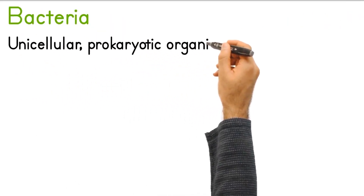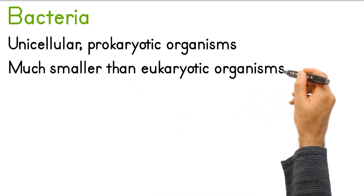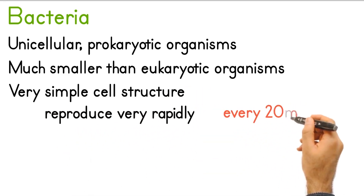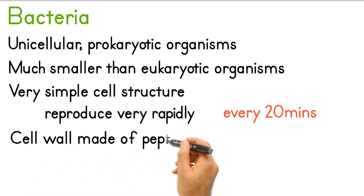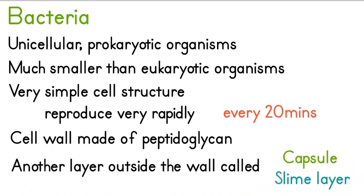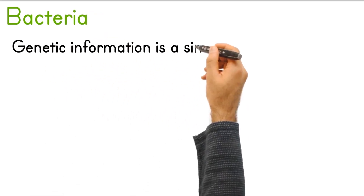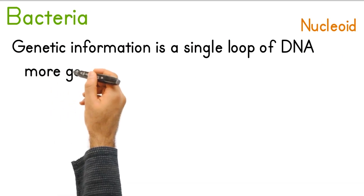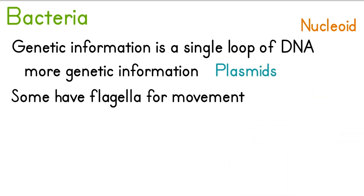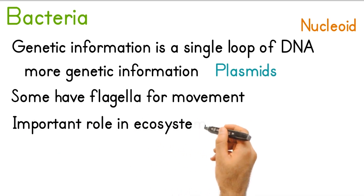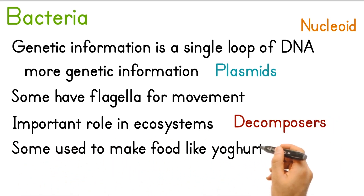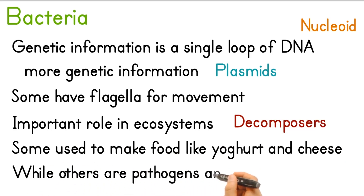Bacteria are unicellular, prokaryotic organisms. They are much smaller than eukaryotic organisms and have a very simple cell structure. They can reproduce very rapidly, around every 20 minutes. Bacterial cells have a cell wall made of peptidoglycan. Some have an additional outer layer called a capsule or slime layer. Genetic information is contained in a single loop of DNA called a nucleoid, and they can also store genetic information in plasmids. Some have flagella for movement. Bacteria and fungi play a very important role in ecosystems as decomposers. Some bacteria are used to make food like yogurt and cheese, while others are pathogens and cause disease.